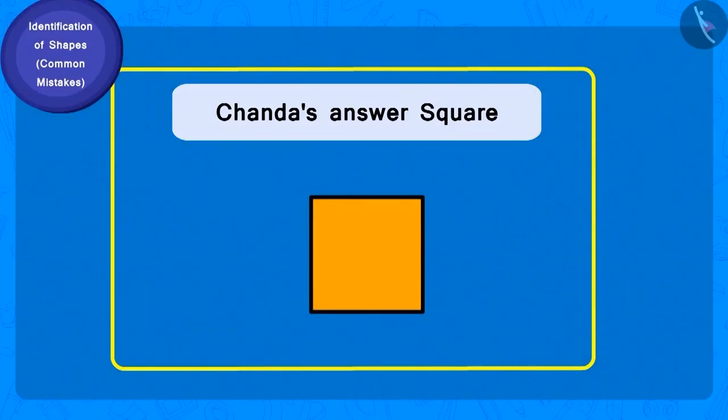Chanda has written square as her answer. How many sides does a square have? Four. And how many corners? Four. Are all the sides of a square equal in length? Yes.